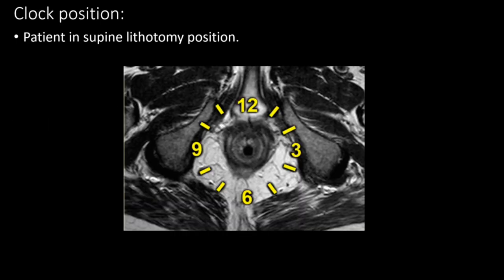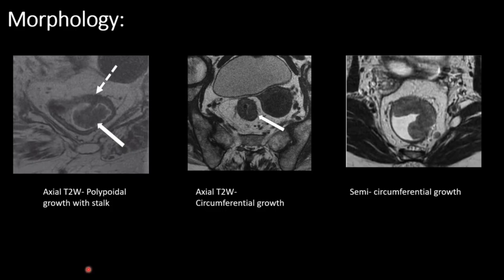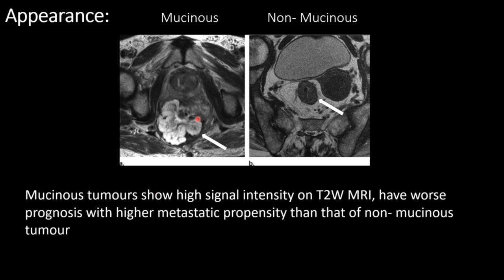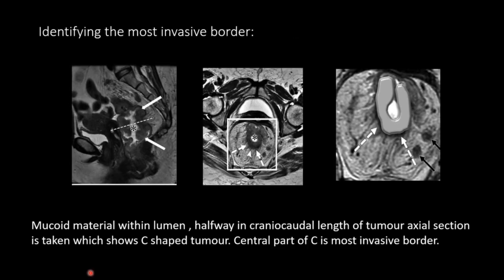For localization of the tumor position, we check according to the anal clock with the patient in supine lithotomy position. These axial T2-weighted images show a polypoidal growth with a stalk, a circumferential growth, and a semicircumferential growth. Mucinous tumors show high signal intensity on T2-weighted images, have poor prognosis with high metastatic propensity compared to non-mucinous tumors which show low signal intensity. To identify the most invasive border, we take the axial section at the midpoint of the craniocaudal length, where the C-shaped tumor's central border represents the most invasive border.